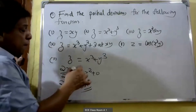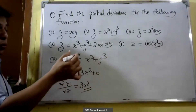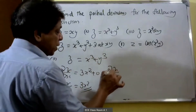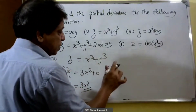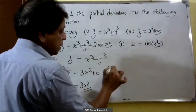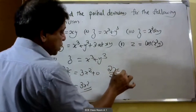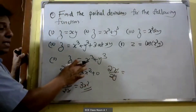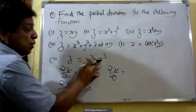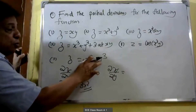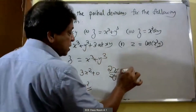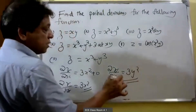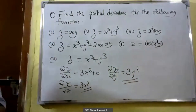Then partially differentiating with respect to y, that is ∂z/∂y. In that case x is treated as constant. Therefore derivative of y³ is equal to 3y². That is the second problem.